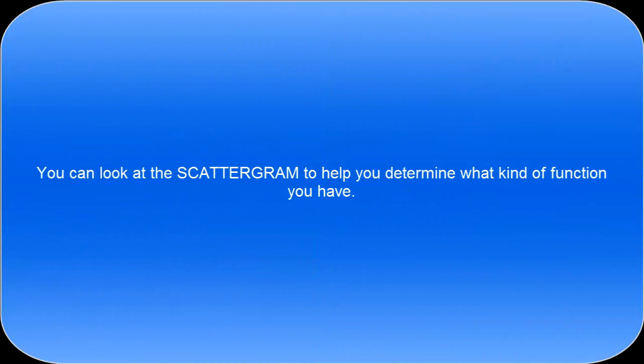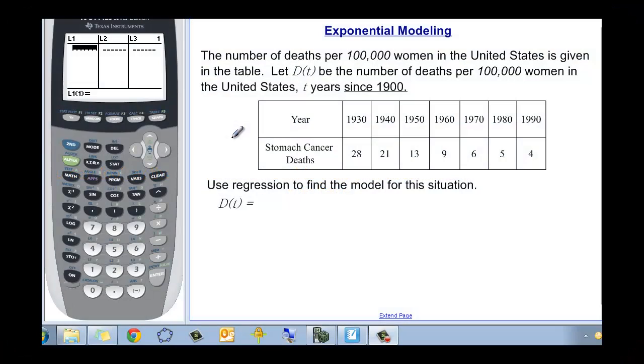This video will talk about exponential modeling. Here's our first example. The number of deaths per 100,000 women in the United States is given in this table. Let d(t) be the number of deaths per 100,000 women in the United States t years since 1900.